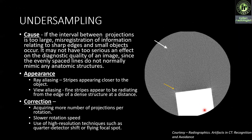Next is undersampling. If the interval between projections is too large, misregistration of information relating to sharp edges and small objects occurs. It may not have too serious an effect on diagnostic quality since the evenly spaced lines do not normally mimic pathological appearances. There are two appearances: ray aliasing, which is stripes appearing closer to the object, and view aliasing, which is stripes appearing away from the object at a distance. Correction: acquiring more projections per rotation, slower rotation speed, and use of high resolution techniques such as quarter detector shift or flying focus.